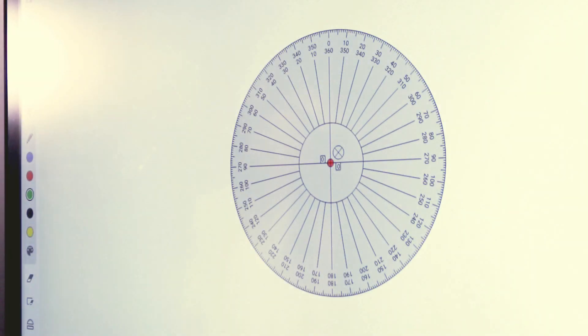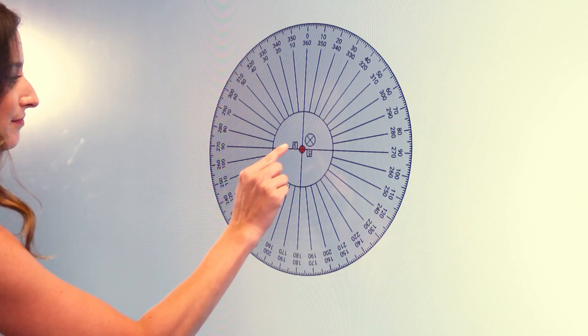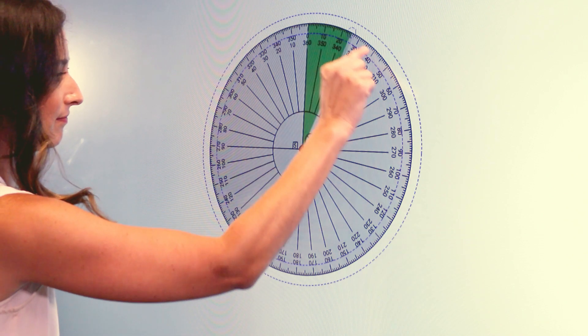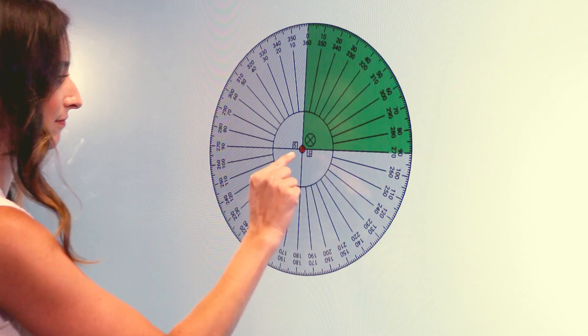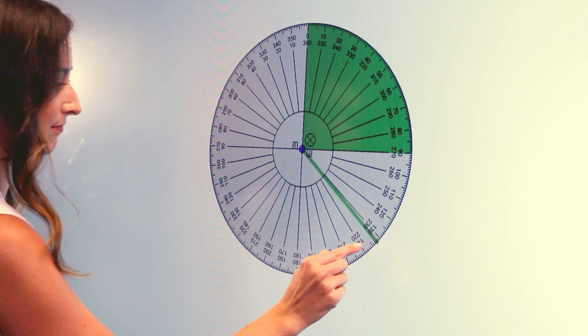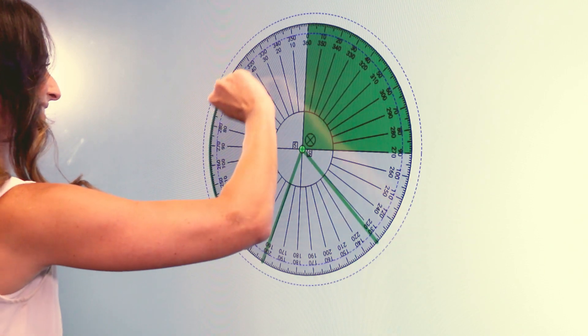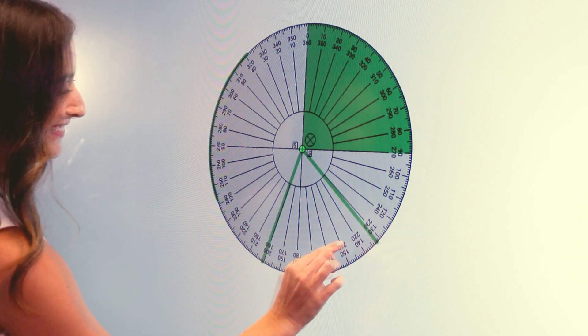The protractor has three drawing modes indicated by colored dots in the center. Tap the dot to cycle through the modes. The first color is red and allows you to draw a filled angle. The second color is blue and allows you to draw lines from the center point. The final color is green and allows you to draw arcs.